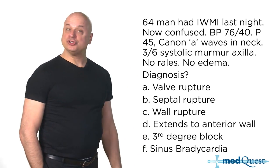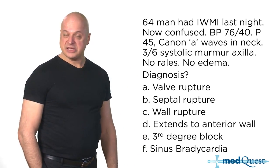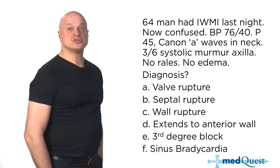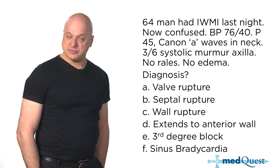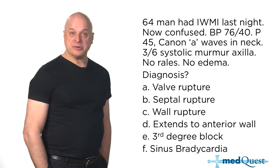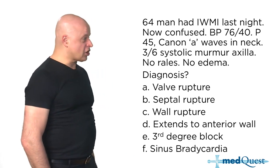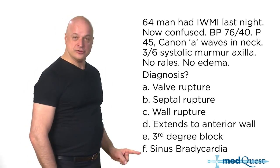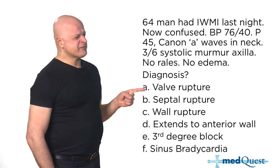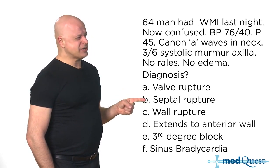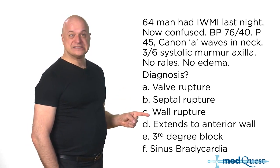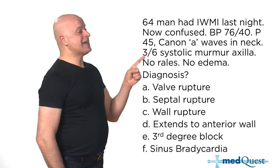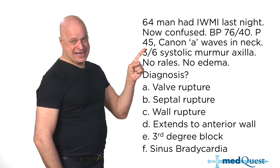Sinus bradycardia is super common in myocardial infarction — it's one of the most common problems because you've simply starved off the SA node. But valve rupture, septal rupture, and wall rupture would all give you tachycardia.